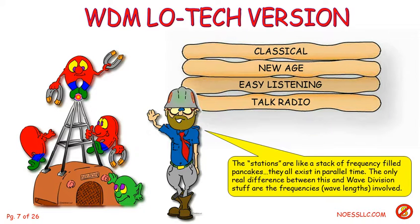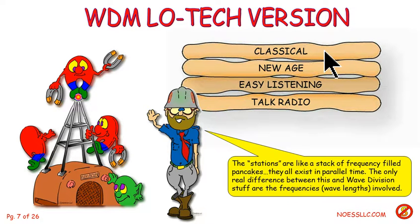Wave division multiplexing, the low-tech version — we're calling it wavelength division, it sounds fancy, but it's just the same thing we've been doing forever. When you tune your radio and you want to listen to classical, you tune to a particular frequency. New age: different frequency. Easy listening, talk radio, and so on.